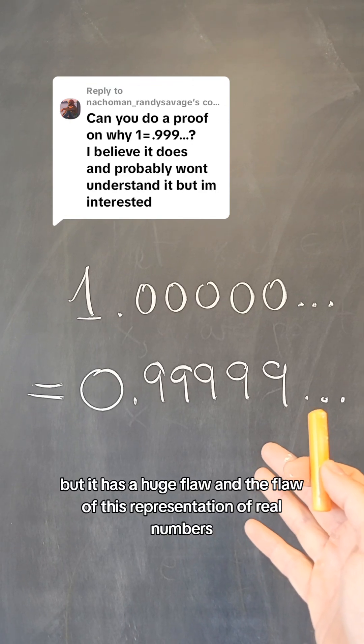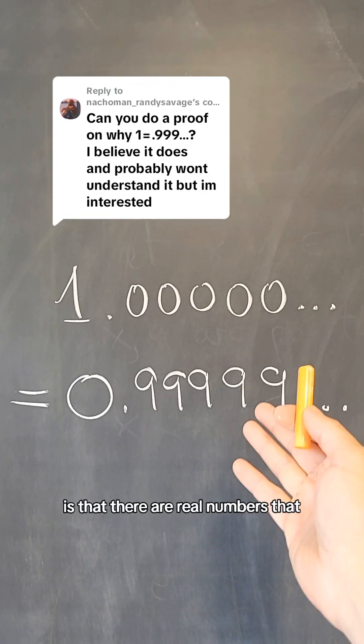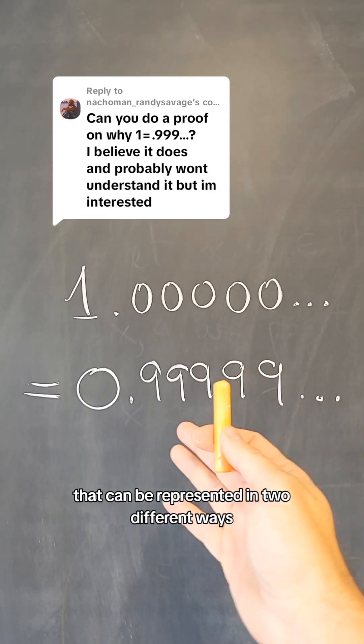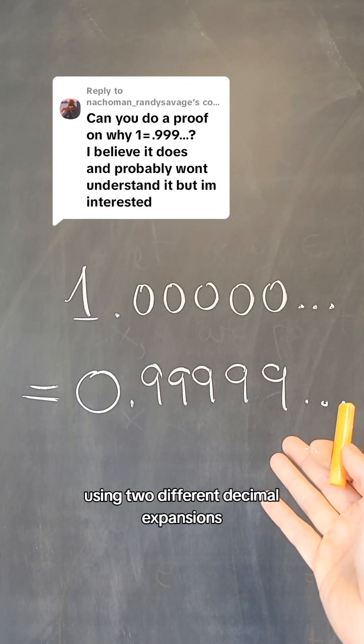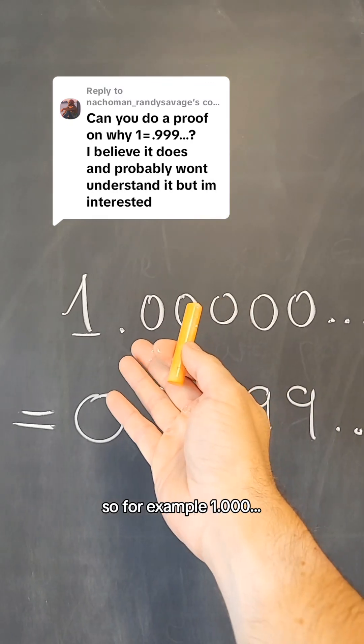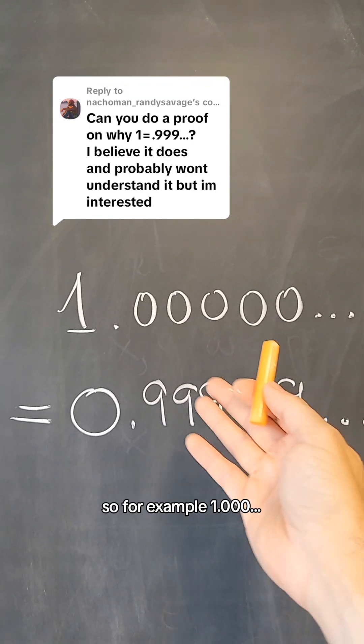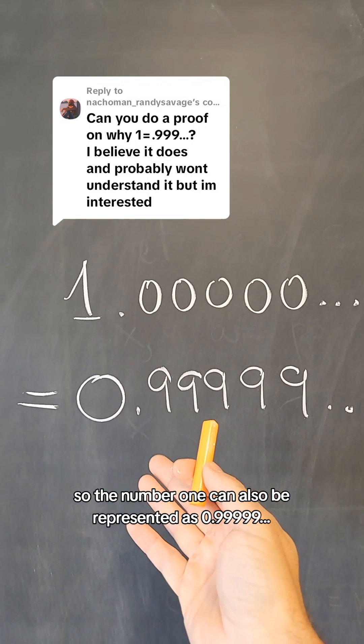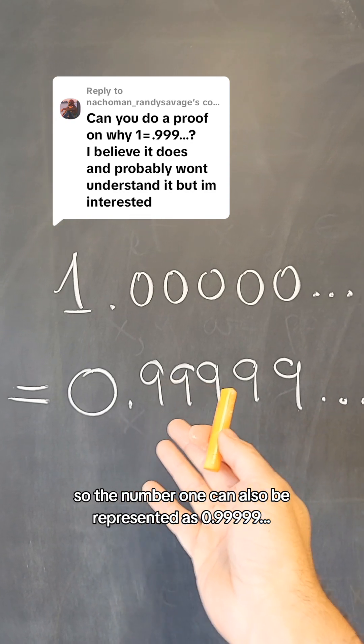The flaw of this representation of real numbers is that there are real numbers that can be represented in two different ways, using two different decimal expansions. So, for example, 1.000, the number 1 can also be represented as 0.999.